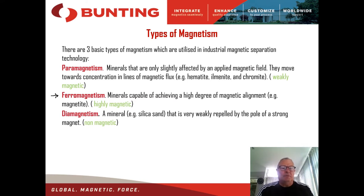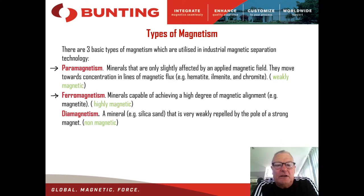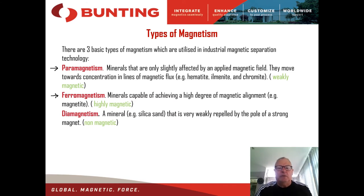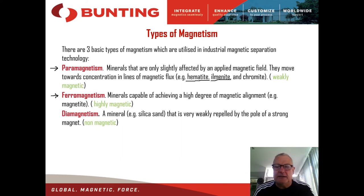The second type of material is paramagnetic materials. These tend to be metallic mineral sulfides and oxides — materials that are only slightly affected by an applied magnetic field. They will move towards the concentration in lines of magnetic flux. Examples of paramagnetic minerals are hematite, ilmenite, and chromite. All of these materials have a fingerprint magnetic susceptibility that allows us to separate them out at specific magnetic field strengths and field gradients. For example, ilmenite has a high magnetic susceptibility and hematite has a much lower one, so I can separate ilmenite at a lower field than hematite and thereby get a selective separation.